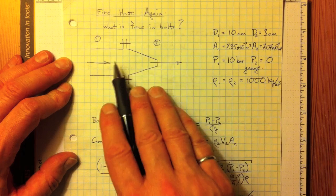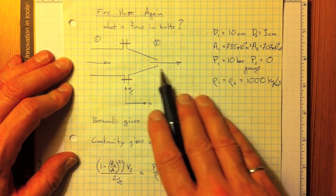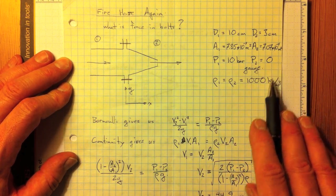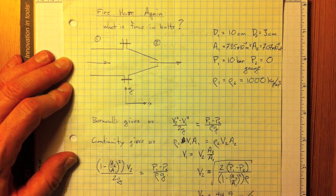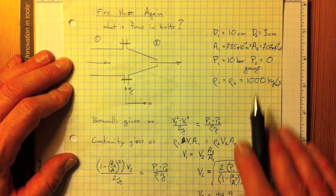If we know that the pressure inside here at location 1 is 10 bar and the pressure out here is atmospheric, that's zero gauge, we can then do some calculations. We'll assume that the density is 1000 kilograms per cubic meter for water.